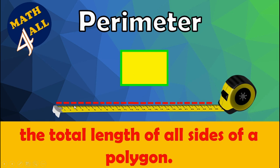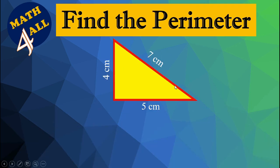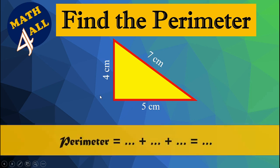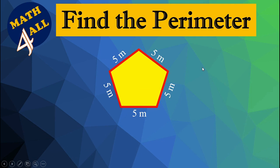The length of all the sides is the perimeter. Now let's find the perimeter of this triangle. First, you have to add all these sides. Let's add them: four plus five equals nine, plus seven equals sixteen. Just sixteen? No — you have to write the measuring unit. It's 16 centimeters.